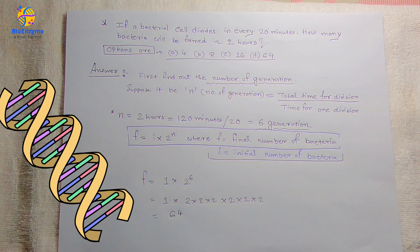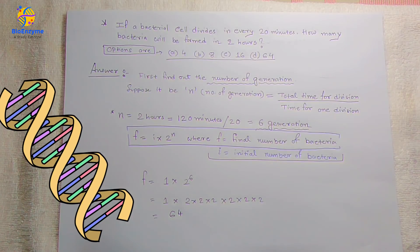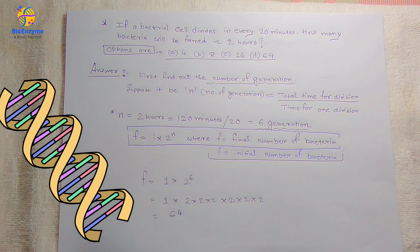Going back to the question: the bacterium divides every 20 minutes, so time for one division is 20 minutes. The total time given is two hours, which equals 120 minutes. So n equals 120 divided by 20, which gives us 6 generations.